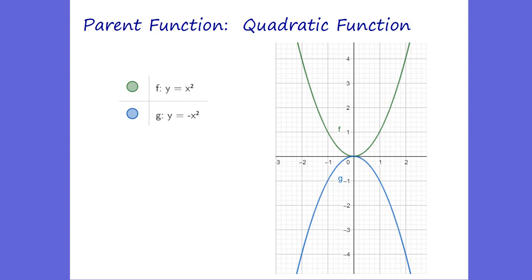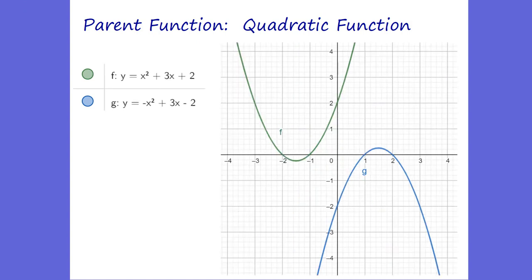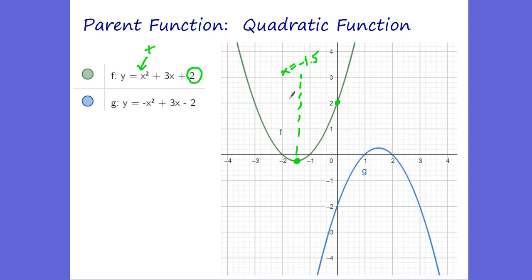We also have two general quadratic functions shown. The first one is y equals x squared plus 3x plus 2. Since this is a positive function, it will be concave up. You can see this 2 is the y-intercept when x equals 0. We also have what's called a vertex — you can see the vertex here is at negative 1.5, and the axis of symmetry at x equals negative 1.5. Both sides are symmetric with one another.